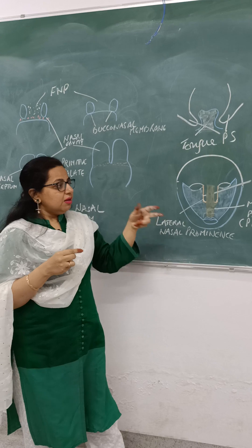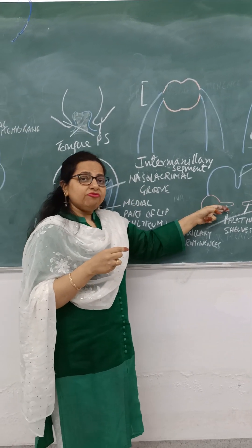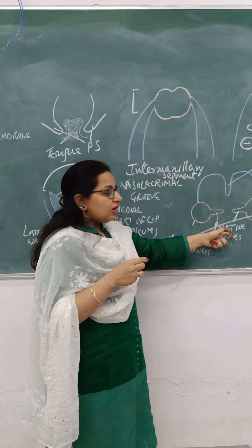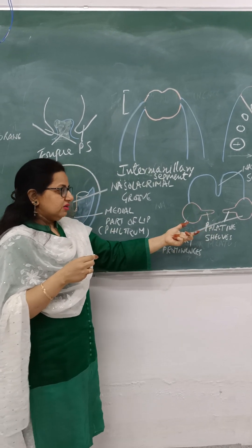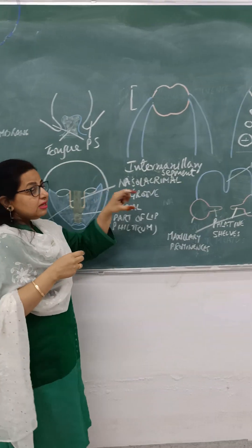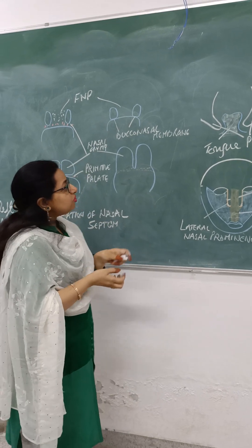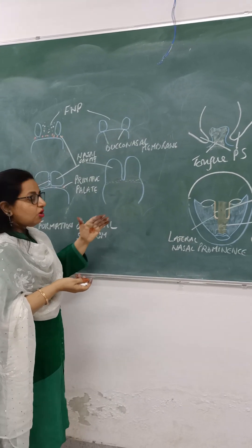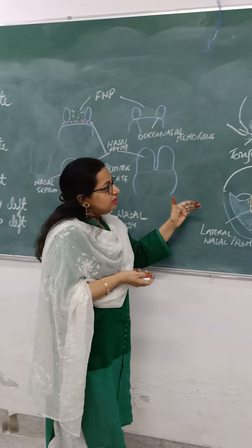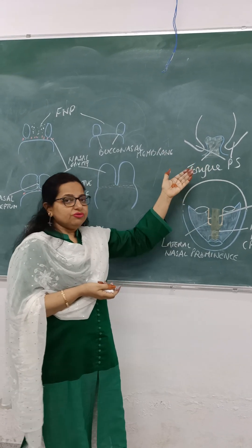This is an important point: palatine shelves develop at the sixth week of intrauterine life, and then become horizontal at the seventh week of intrauterine life, making the tongue fall downwards between the two palatine shelves. We will revisit this when we discuss cleft palate. This is how the normal development of the palate occurs from the primary and secondary palate.